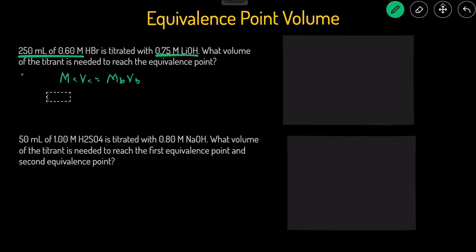So the molarity of the acid, that's the 0.6 molar HBr. And I know this is acid because it has an H in the front. Base will have OH in it. The volume of the acid is 250 milliliters. It's okay to keep in milliliters. We don't have to convert this to liters.